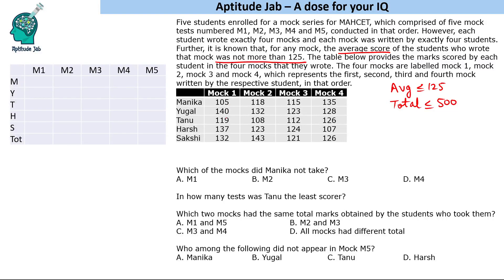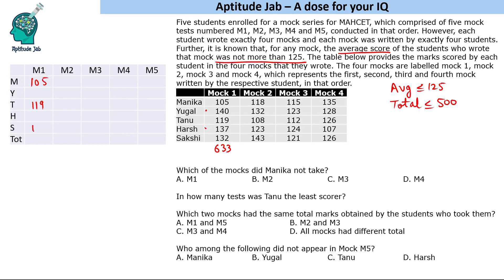First, we add the scores for Mock 1: 45 + 64 + 101 + 133 = 633. Since the total must be ≤ 500, the person not writing this mock must have a score greater than 133. Removing 119 gives 514, which is still greater than 500. So we must remove at least 133, meaning either Yugal or Harsh will not write this test, and the other three will appear.